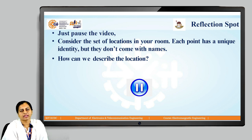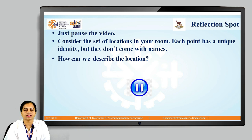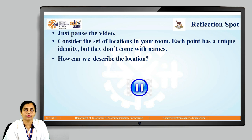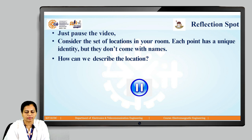So here we have a reflection spot — just pause the video and try to answer this question. Consider the set of locations in your room; each point has a unique identity in the room, but they do not come with names. So how can we describe the location of that point in our room? Pause the video and try to answer.